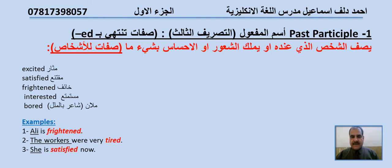Adjectives ending with -ed. Past participle is used to describe the person who has a feeling of something. اسم المفعول يصف الشخص الذي يملك الشعور أو الإحساس بشيء ما. هي صفات الأشخاص، على سبيل المثال: Excited مثار، Satisfied مقتنع، Frightened خائف، Interested مستمتع، Bored شاعر بالملل.